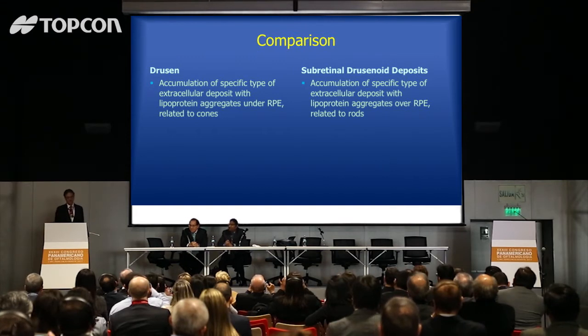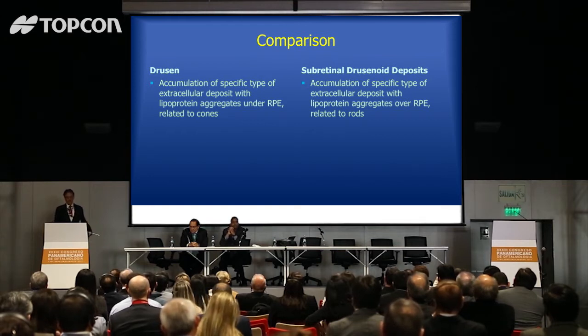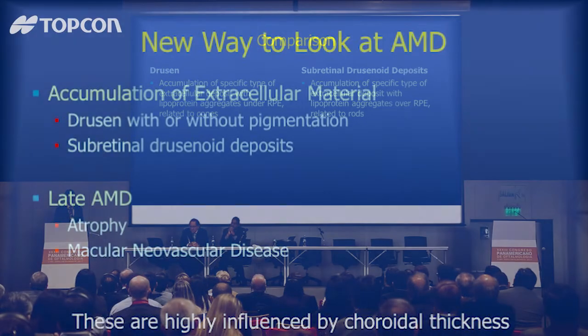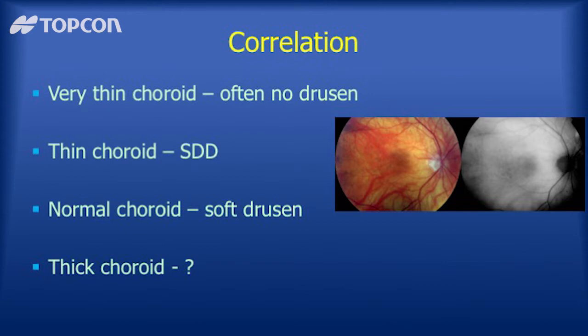Another way to think about it is that as you get older, extracellular deposits can occur. Some we call drusen — underneath the RPE — and some are above the RPE, which we call subretinal drusenoid deposits. That's basically the hallmark of early AMD: an accumulation of extracellular material in the context of aging. Late AMD is the development of atrophy or neovascularization. This is highly influenced by choroidal thickness — patients with thin choroids are more likely to have pseudodrusen, patients with regular-thickness choroids have soft drusen.